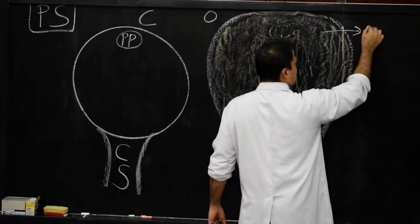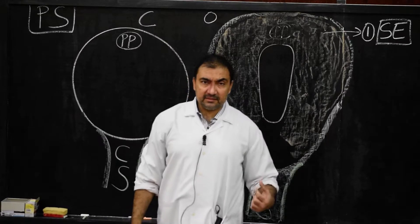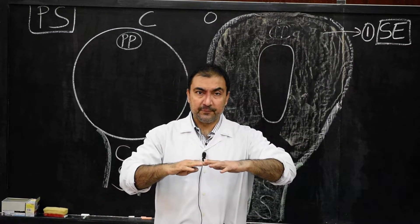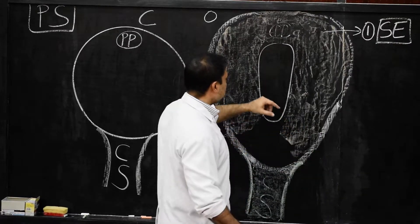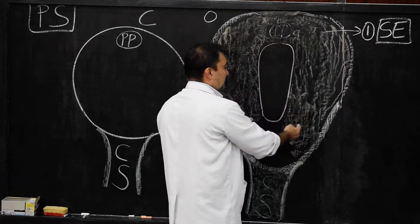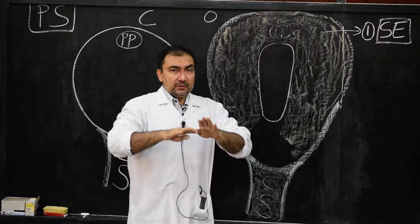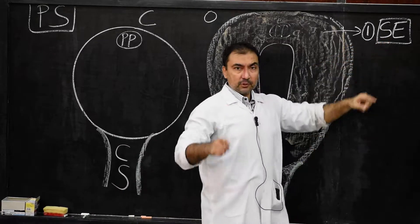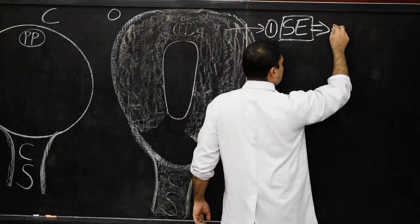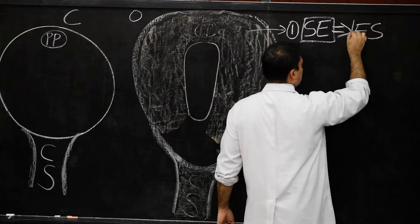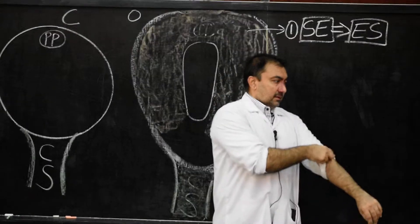The first ectodermal layer to differentiate from the epiblast will be surface ectoderm, covering the cephalic end and the lateral margins of the entire embryo. What will it develop into? It will develop into the epidermis of the skin. The entire surface ectoderm will develop into the epidermis of the skin of the embryo — very important.